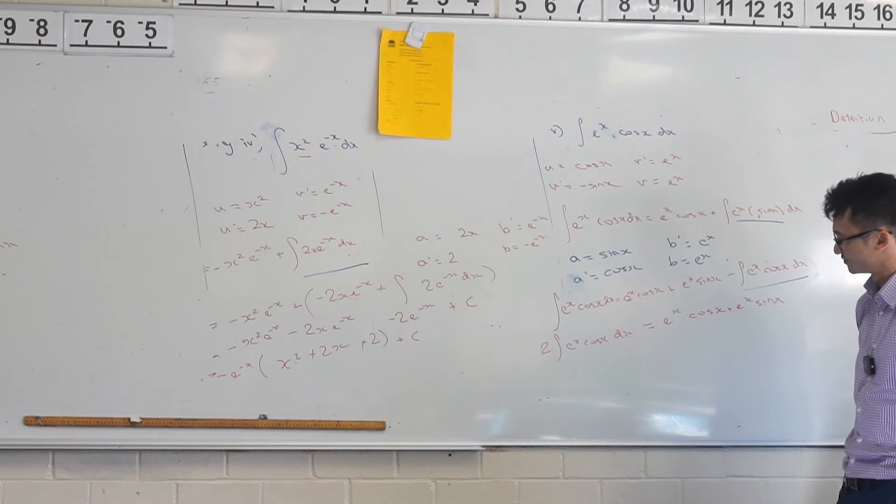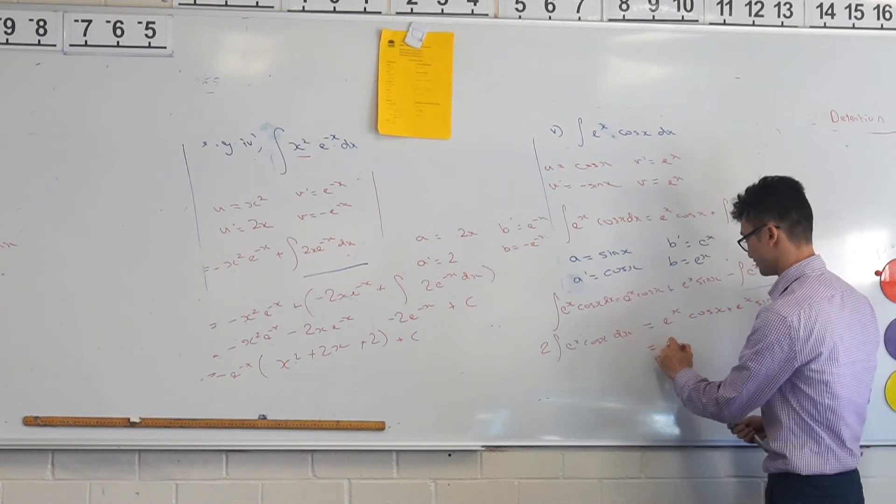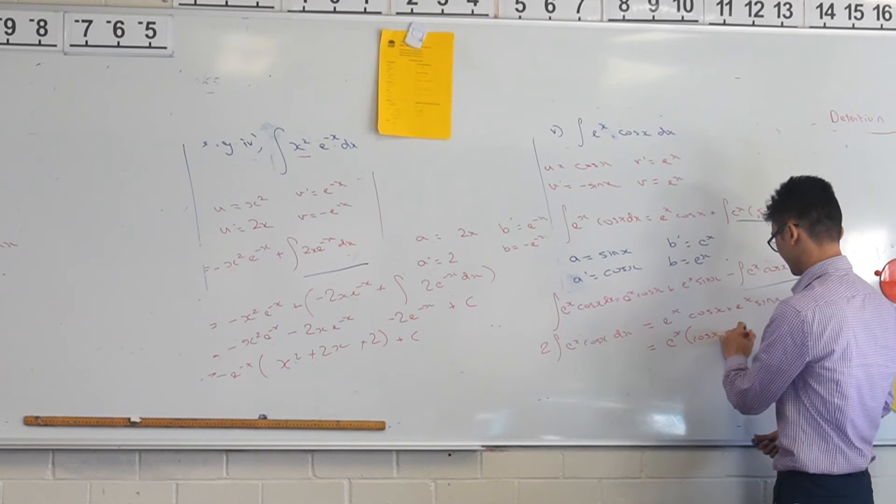Okay, because I was thinking you could factorize e to the x on the right hand side. On the right hand side, you want to do that? We can try it. But I was thinking because cos x plus sin x equals 1. Hmm, well, squared, yeah.